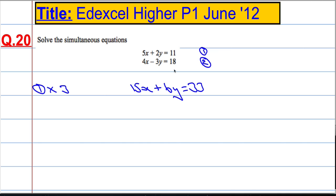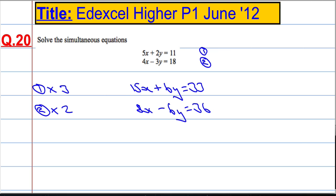In equation 2, I'm going to multiply everything by 2. So, take equation 2 and multiply everything by 2: 2 times 4x is 8x, and that's a minus sign, 2 times 3y is 6y, and 2 times 18 is 36.